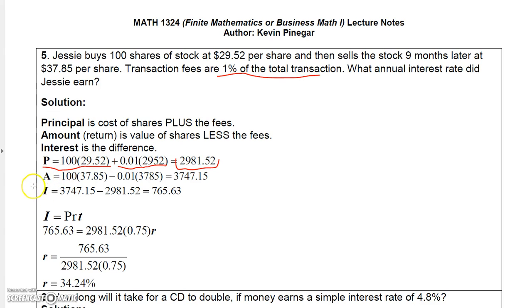But here's the catch. When you sell your shares, you're going to sell 100 shares at $37.85. That's going to give you $3,785, but you have to pay out of that 1%. So you're going to lose 1% of that because you're going to pay that to your broker. So you're only going to gain $3,747.15. And so now the difference between the amount you invested and the amount you gained is actually going to be your interest.